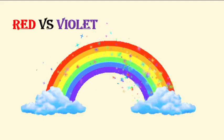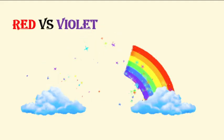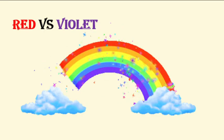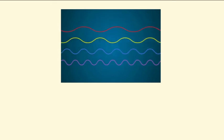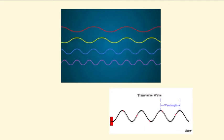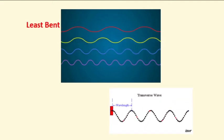Which color of the rainbow has the longest wavelength? It's red. How about the color that is most bent, or has the shortest wavelength? Correct — violet. Red is least bent among the colors because it has the longest wavelength. Wavelength is the distance between crest to crest or trough to trough.